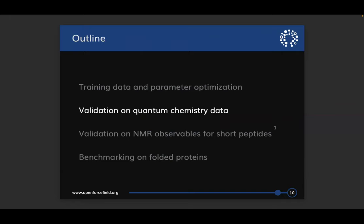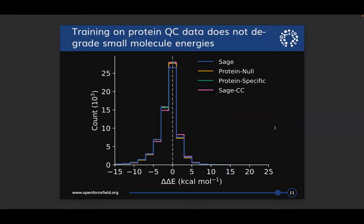Next I'll tell you about validation of those optimized models on quantum chemistry data. Looking at a standard step plot showing a histogram of relative conformer energies, the conclusion is that if we look at the new optimized null and specific models compared to the starting point, we don't see any degradation in relative conformer energies. This means that when we train on protein QC data, we don't degrade our ability to match conformer energies for small molecules.